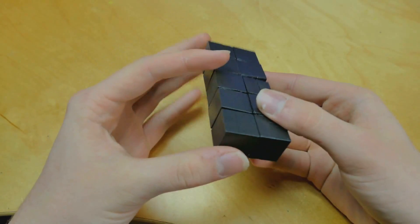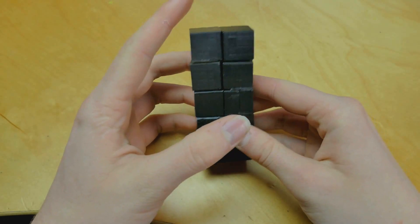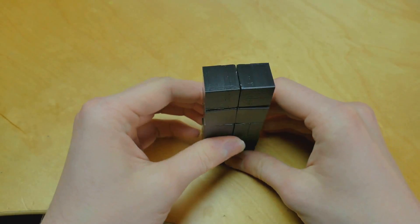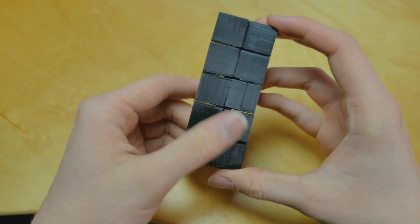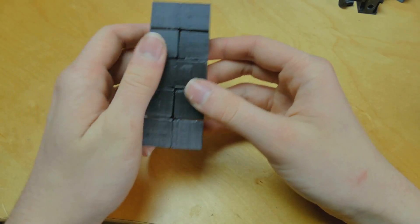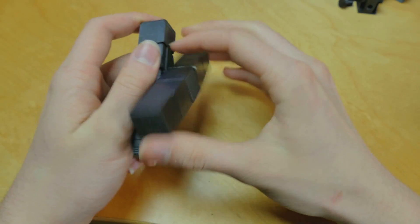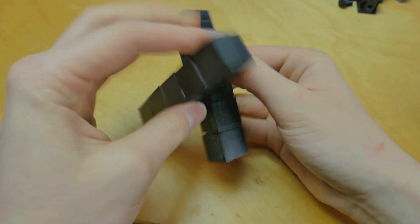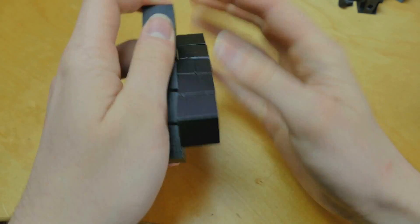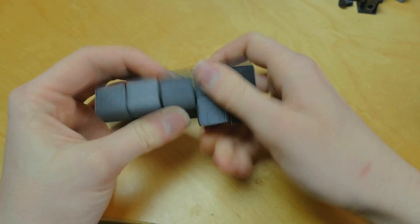This is my fully functional 3D printed 1x2x5. This is actually the second puzzle that I have designed and had 3D printed. The turning on this puzzle is fairly decent. These long turns are a bit catchy but for the most part they work well. These inner layers are very, very nice.